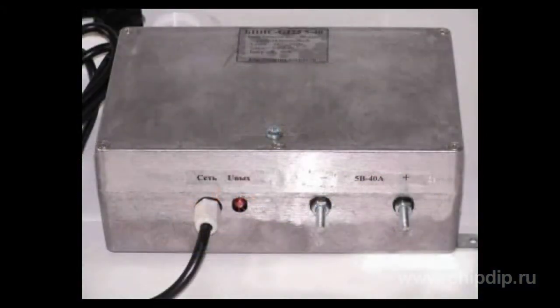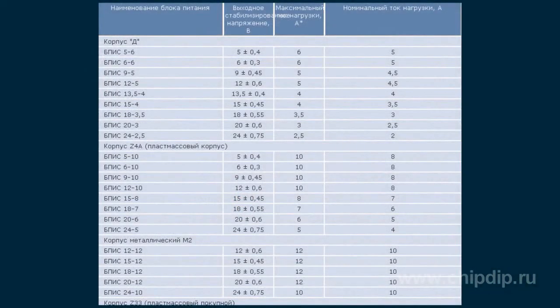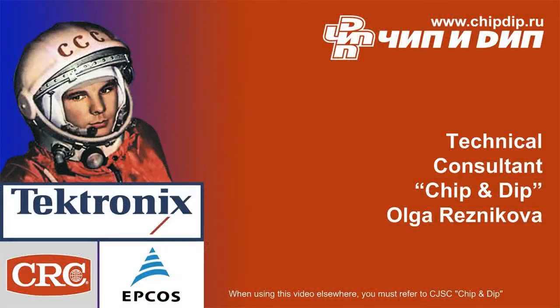Pulse power supply units are produced in plastic and metal cases. A nominal load current can be selected in the range from 2 to 10 amperes, and the stabilized output voltage will vary from 5 to 24 volts.